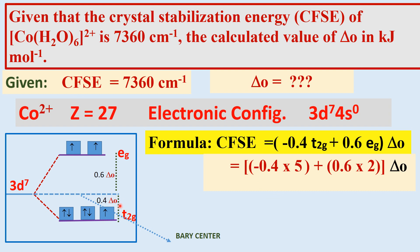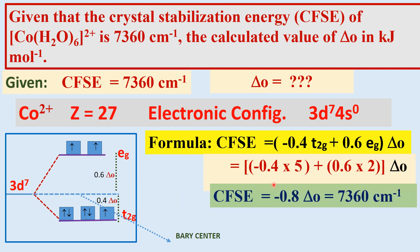Substituting: CFSE = (-0.4 × 5) + (0.6 × 2) × Δ₀ = -0.8 Δ₀. In this problem, the crystal field stabilization energy is given as 7360 cm⁻¹.